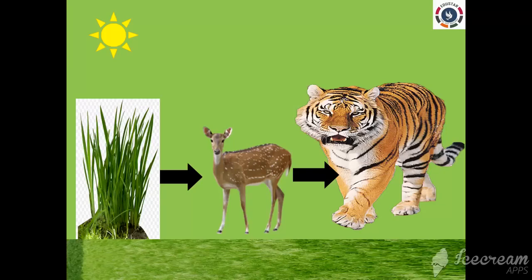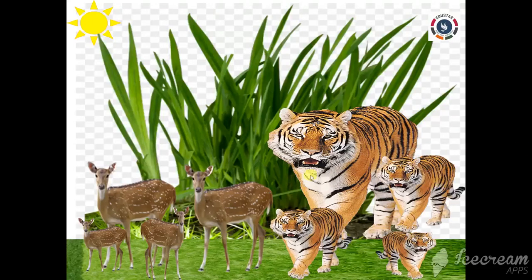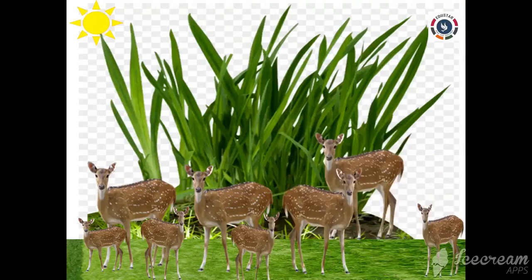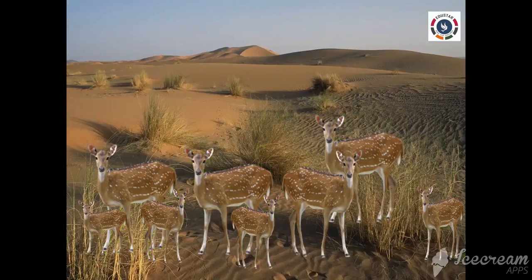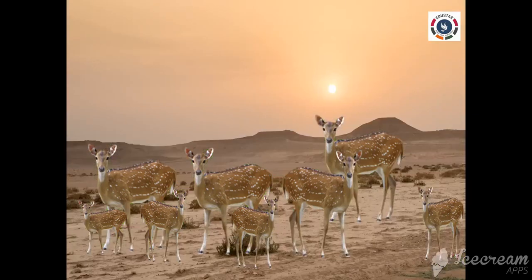Now let us discuss what happens when a particular trophic level is removed from the food chain. Consider the food chain: grass is eaten by deer, and deer is eaten by the tiger. If all the lions in the forest are removed by capturing or killing, there will be no control over the population of deer. This will increase the deer population, which will result in the reduction of grass due to overgrazing, ultimately eliminating grass and other green plants and turning the green forest into a desert.